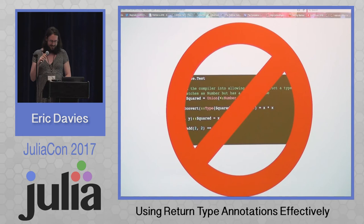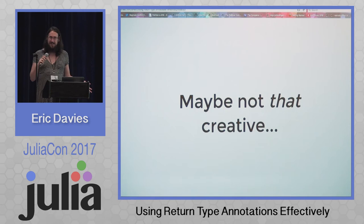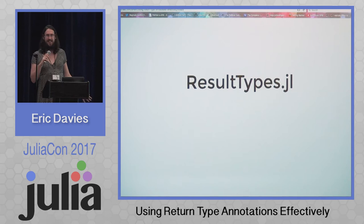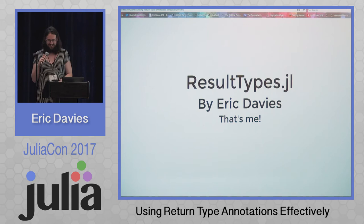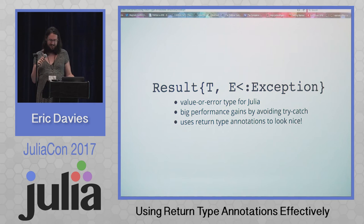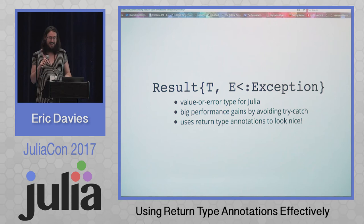What are some maybe reasonable non-trivial things we can do with return type annotations? I did one last year — I was really excited to get return type annotations in and wanted to demonstrate they could be cool. So ResultTypes.jl is a package that does something interesting and not terrible. I wrote it during last year's JuliaCon and it's about 64 lines. It contains one type which is Result, and that contains either some value of type T or some error of type E — it's a value-or-error type. You could use it instead of try-catch control flow to get some big performance gains, and with return type annotations it ends up looking pretty nice.